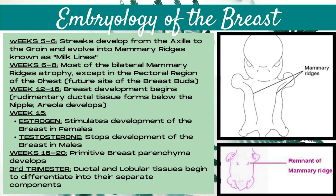To truly understand accessory breast tissue versus the axillary tail of Spence, we have to look back to the embryology of the breast. In weeks five to six, streaks develop from the axilla to the groin and evolve into what we call mammary ridges, known as the milk lines. And later, during weeks six to eight, most of the bilateral mammary ridges atrophy, except in the pectoral region of the chest, which will be the future site of the breast buds.